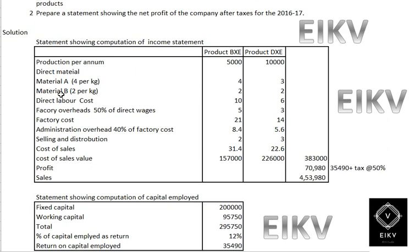Moving to the solution — the statement for computation of profit for BXE and DXE. Product output per annum: 5,000 for BXE and 10,000 for DXE. Direct material A at 4 per kg: 4 for BXE and 3 for DXE. Direct material B at 2 per kg: 2 for BXE and 2 for DXE. Direct labor cost: 10 for BXE and 6 for DXE.